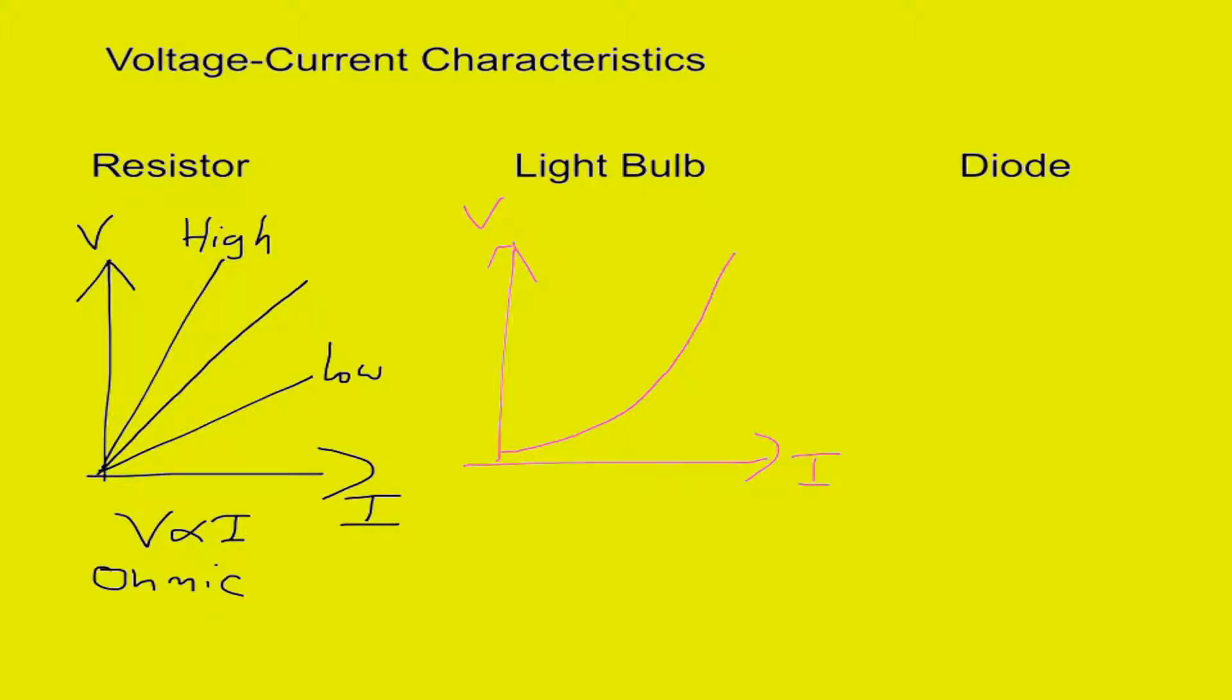Moving on to the case of a diode. A diode is a semiconductor and that does something a little bit different. Again, we start at the origin. Now, in reverse bias,